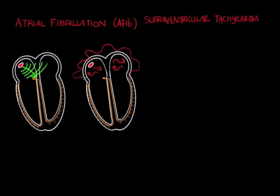It actually kind of looks like there's a bag of worms in the atria, all moving around. Also, the wavelets are doing their own thing, so they're going to be signaling the AV node erratically. And this is going to lead to an irregular rhythm because of the irregular stimulation.